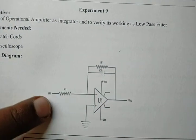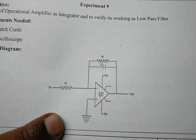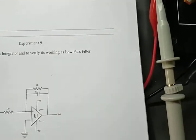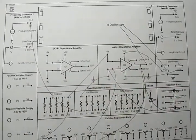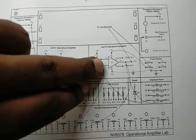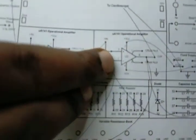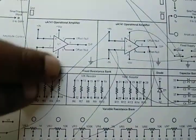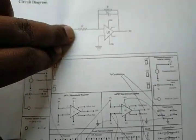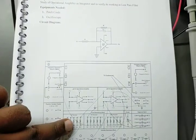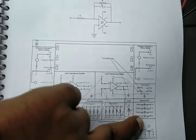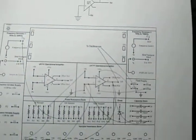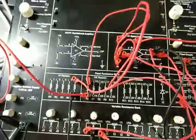Let's see — this is our circuit which we have connected on our kit. Here we have the op-amp, and we have connected one resistor as you can see here, and we have connected one capacitor from this side. This is the circuit which we have designed on our trainer kit.